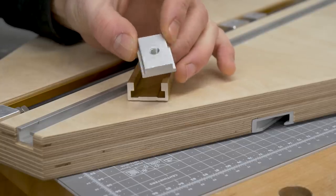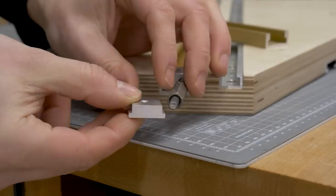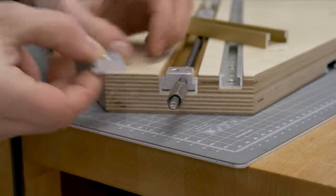There are similar T-slot nuts in the market, but they only have 8mm walls, so I decided to make some thicker ones myself using an aluminum plate.